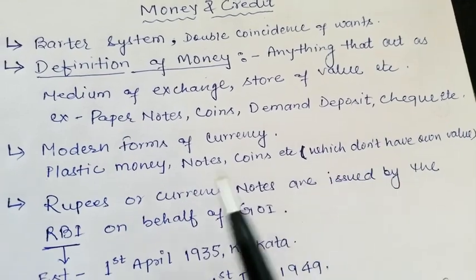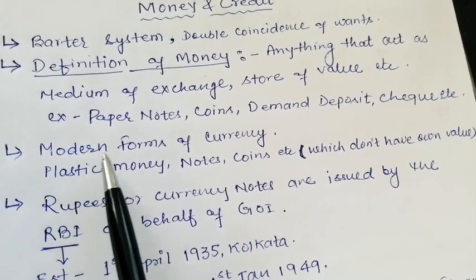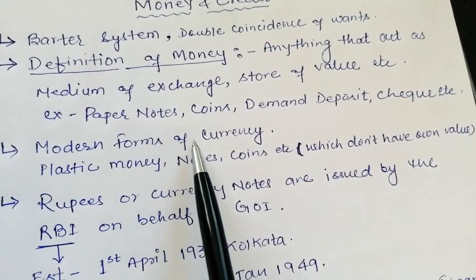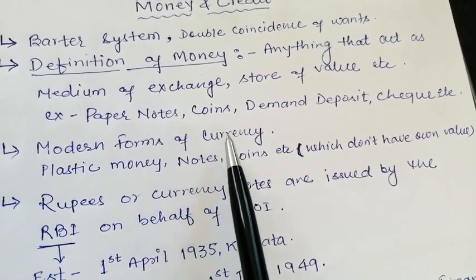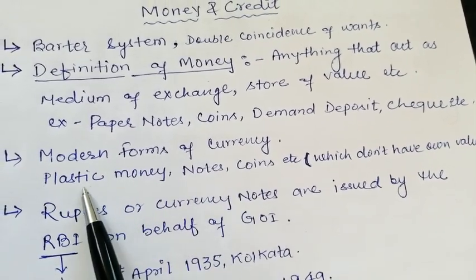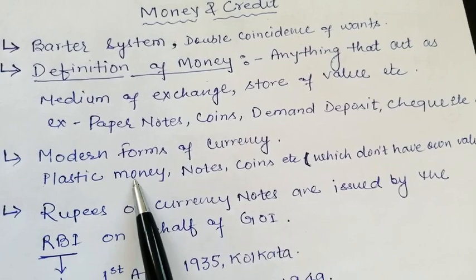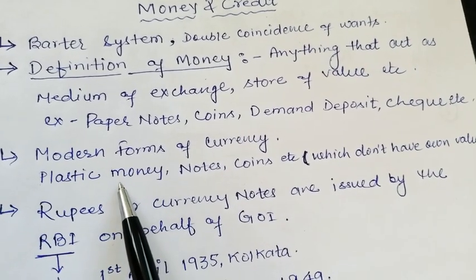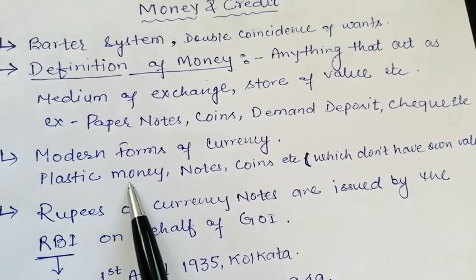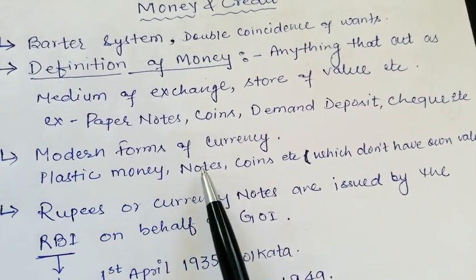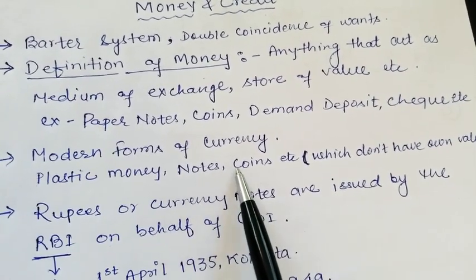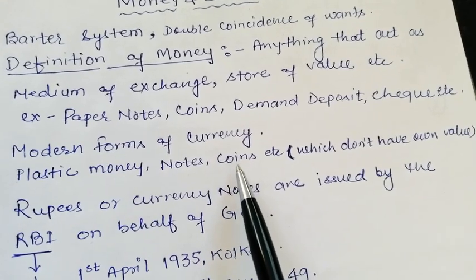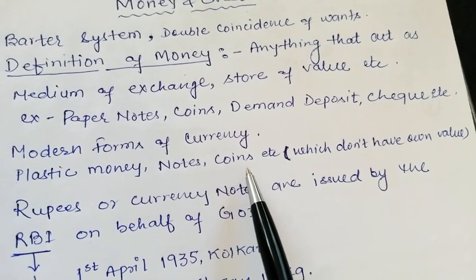So these are the basic forms of money. Now students, what are modern forms of currency? Modern forms of currency — as you know, plastic money is also a modern form of currency, like debit cards and credit cards. Notes and coins are also modern forms of currency.